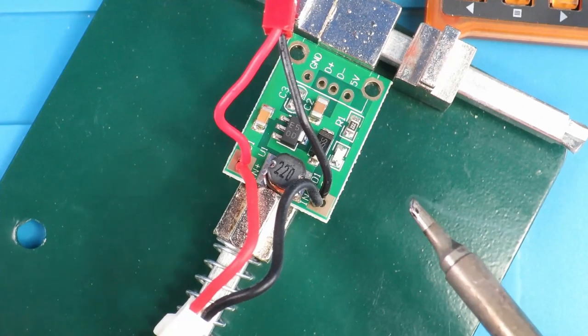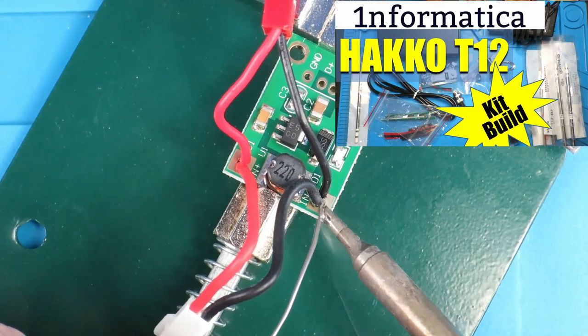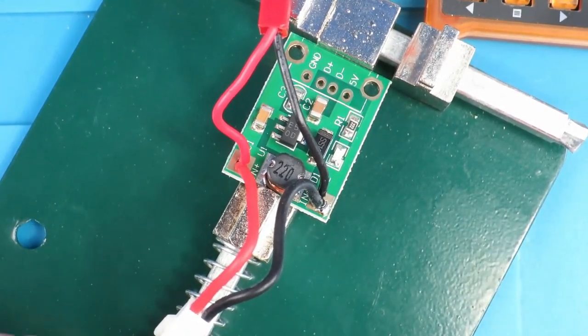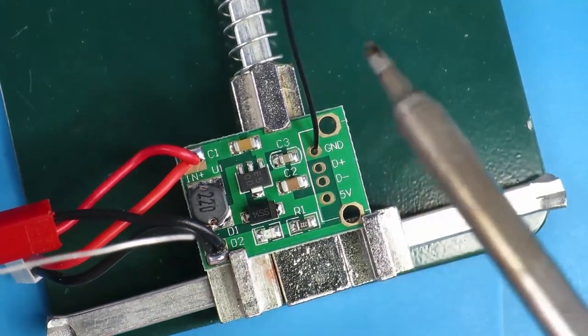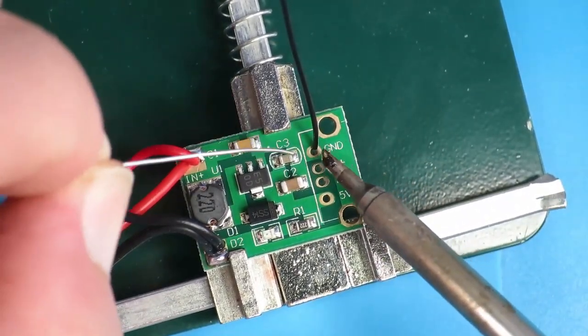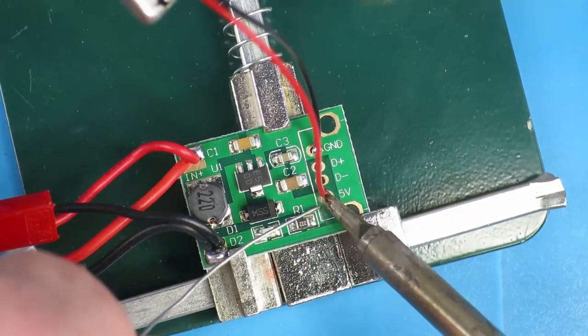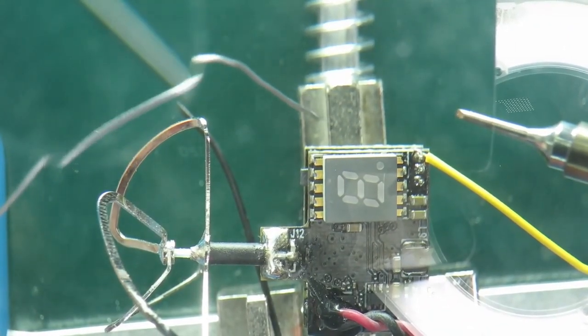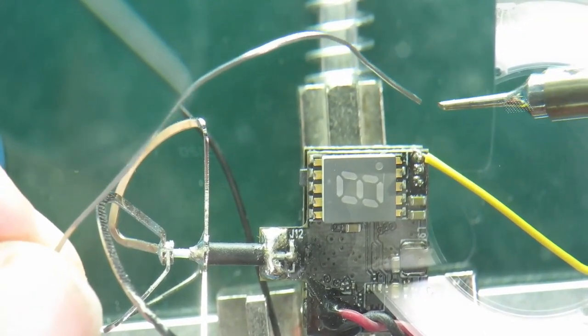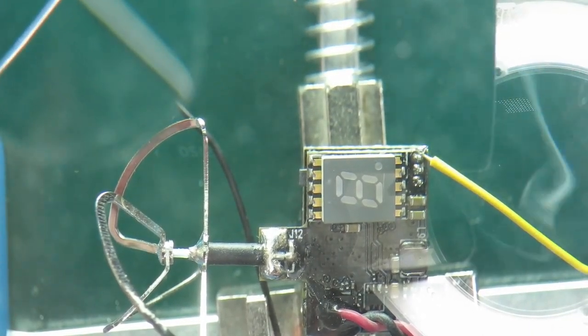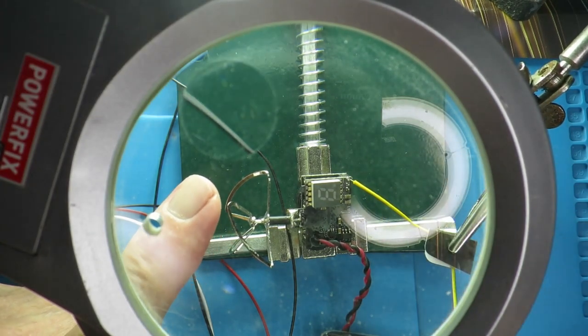Using the standard tip on my Hakko soldering iron we're just going to solder the power connectors on first, followed by the ground and plus five volts for the DVR. Finally I switch to a much finer tip on my iron for the final job which is a little bit tricky. Forgive the shaking. It appears to be firmly fixed.